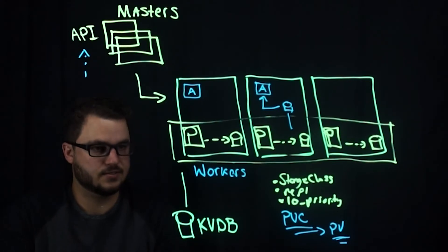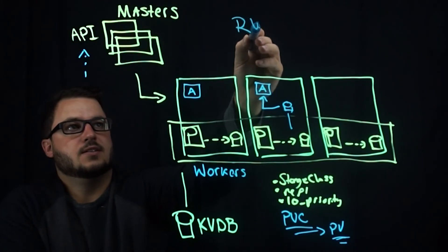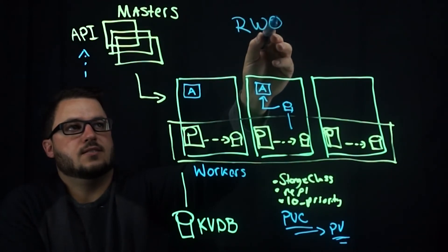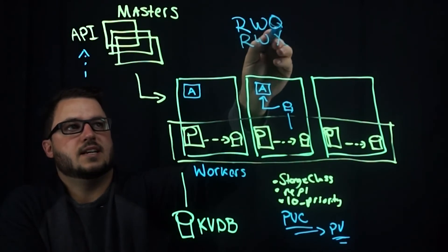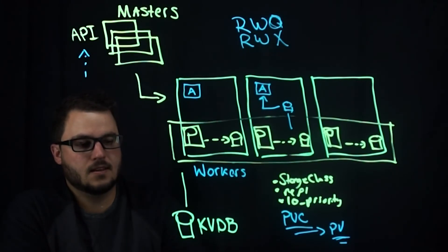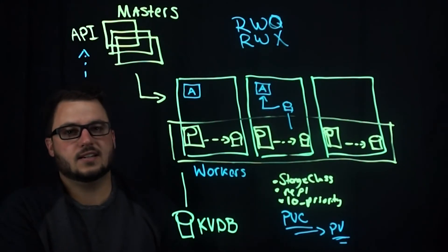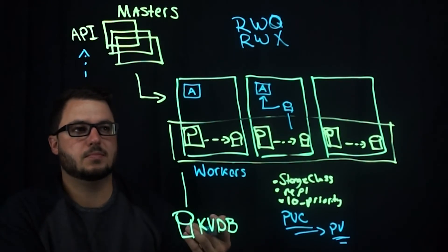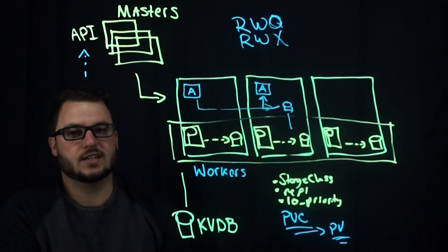Portworx offers two kinds of volumes. Read-write-once is basically your block, and this is typically referenced by a single volume. Then read-write-many is when multiple pods can access the same volume. We'll get into shared volumes a little more in another video.